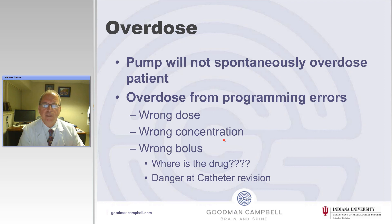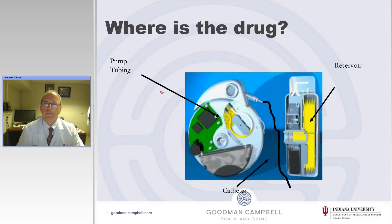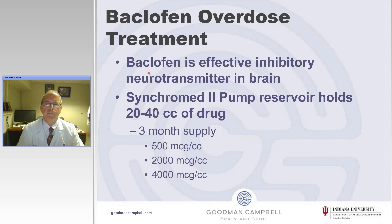Where is the drug is a big concern, and there is a danger of overdose with catheter revisions. A drug can be in the reservoir, in the internal pump tubing, or in the catheter.